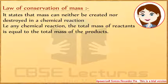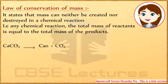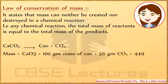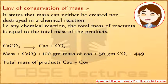the total mass of reactants is equal to the total mass of products. Calcium carbonate on heating decomposes to form calcium oxide: CaCO3 under heat gives CaO plus CO2, that is lime water CaO. Mass of CaCO3 is 100 grams, mass of CaO is 56 grams, and mass of CO2 is 44 grams. Total mass of CaO plus CO2 is 100 grams.